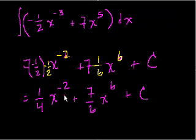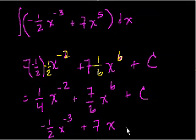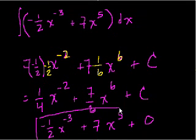There you go. And if you want to take the derivative, minus 2 times 1 fourth is minus 2 fourths, which is minus 1 half, x to the minus 3. And then 6 times 7 sixths is 7x. And then you decrease the exponent by 1, x to the fifth. And then the derivative of a constant is 0. And then we get our original expression.